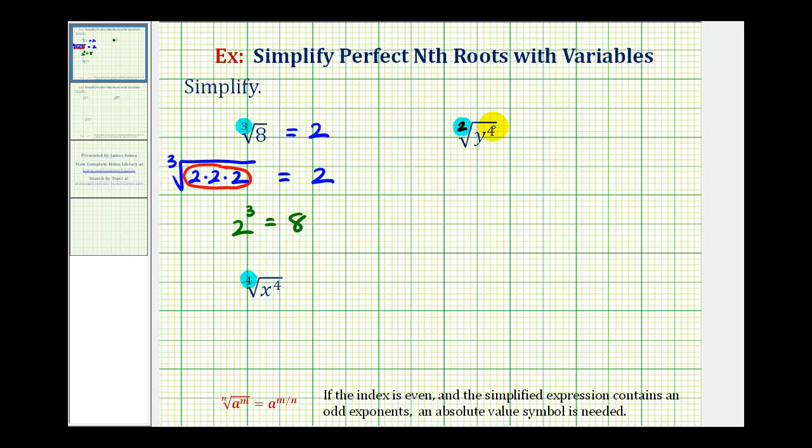So for the square root of y to the fourth, we want some expression squared that's equal to y to the fourth. So when dealing with variables, that question might be a little more challenging. So it's probably going to be helpful to show the work as we did here when the radicand was a number. So for y to the fourth, we would have four factors of y.